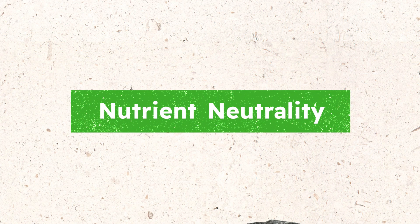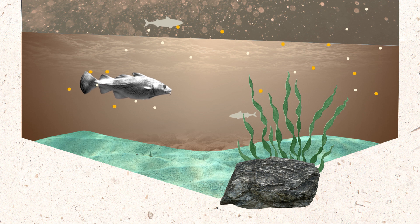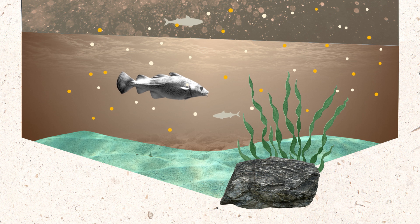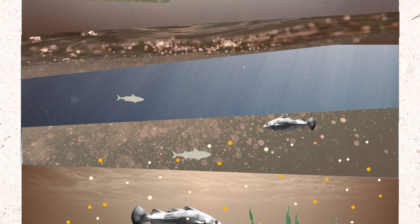Nutrient neutrality is another key nature market. It's all about making sure that the level of nitrates and phosphates in our waterways doesn't get any worse.